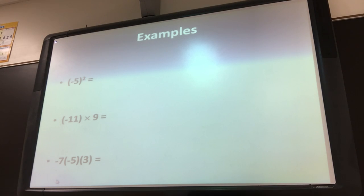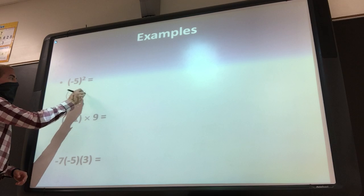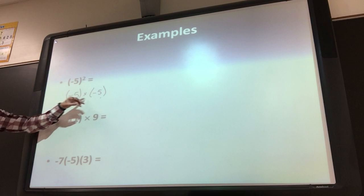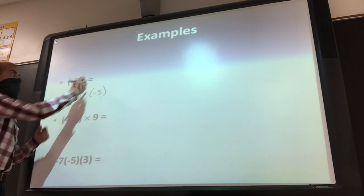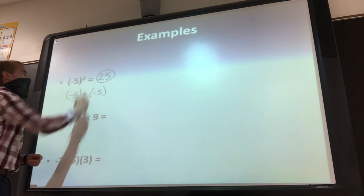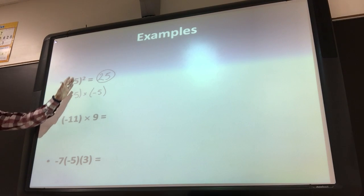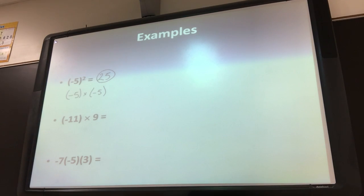Our first one here: negative 5 squared. Remember, that's like saying negative 5 times negative 5. So this is saying negative 5 times itself. If you multiply two negatives together, your answer is going to be a positive. So it's going to be positive 25. Because that negative 5 is what's being squared, you've got to do negative 5 times itself — negative 5 times negative 5 gets you positive 25.